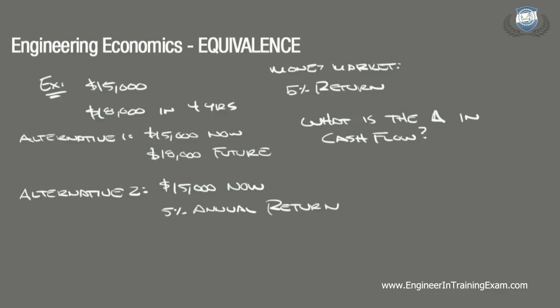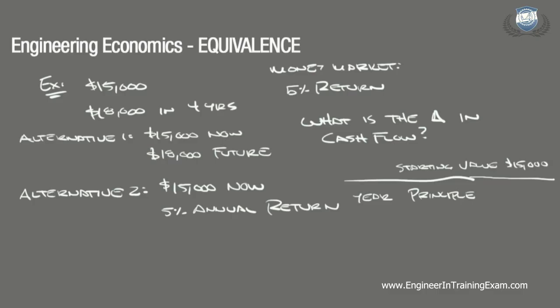Let's illustrate the equivalence of this alternative using a table. The first column represents the year, the second column represents the principal, and the third column represents the interest. In year one, we put $15,000 into the money market. At the end of that year, we get 5% annual return — 5% of $15,000 is $750. We add that to our principal going into year two, which is $15,750. The interest at the end of year two is 5% of $15,750, which is $787.50.